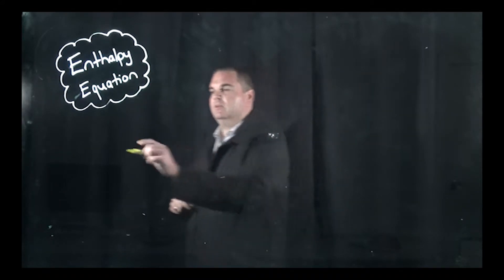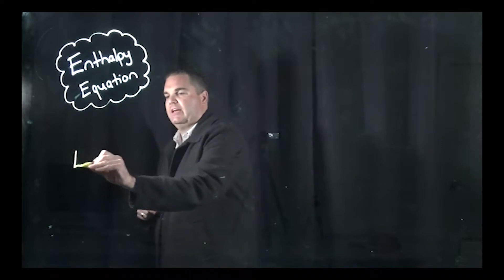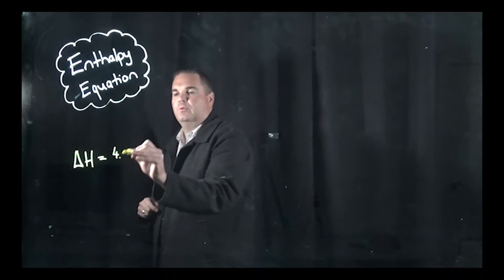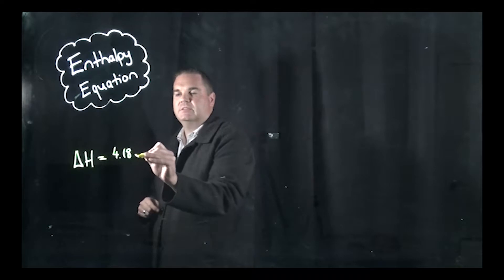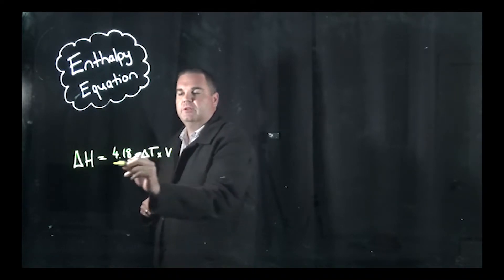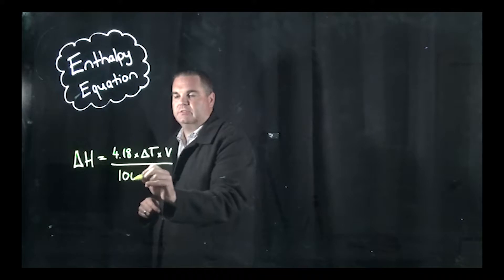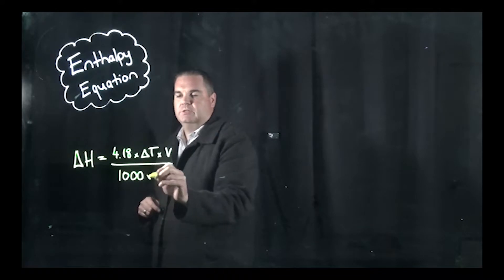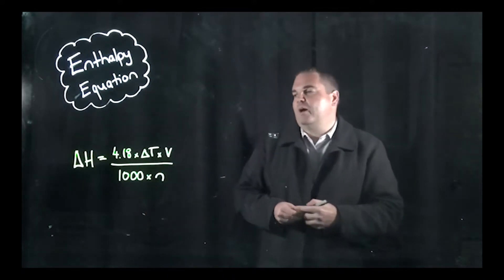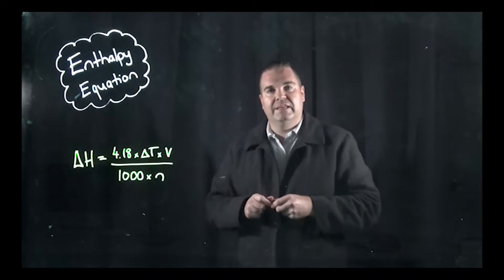So if you remember the enthalpy equation, to calculate your enthalpy — delta H — it's 4.18 times the change in temperature, times the volume, over 1,000 times the number of moles. So that's our equation and there are a couple of variables within it.